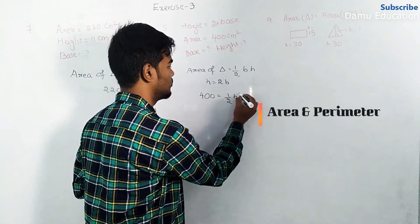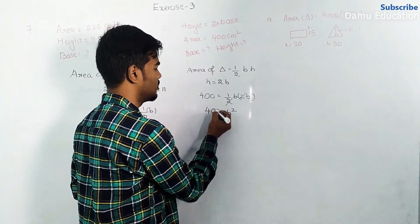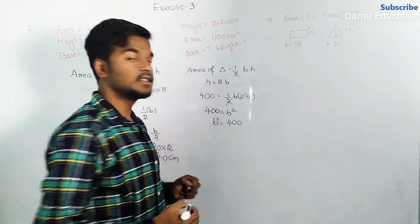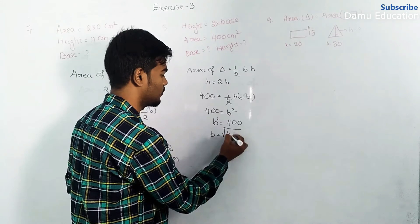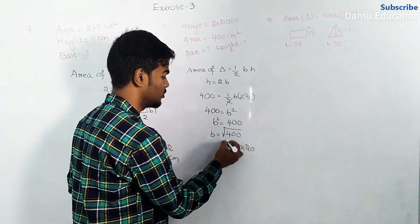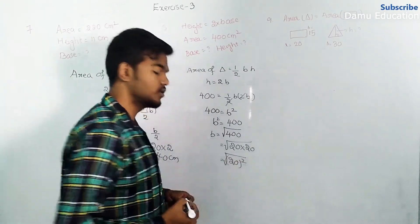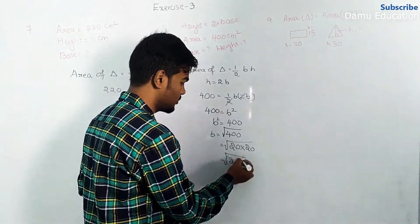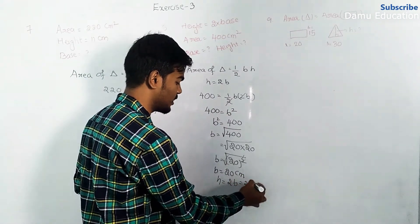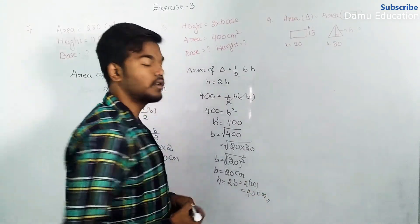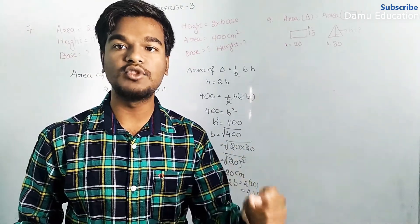Substituting height as 2B, the 2 and the half cancel, leaving B squared equals 400. So B equals the square root of 400, which is 20, since 20 squared equals 400. Therefore base B equals 20 centimeters, and height H equals 2 into 20, which equals 40 centimeters.